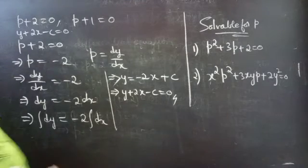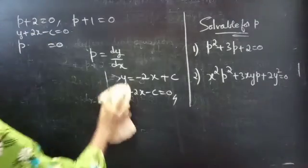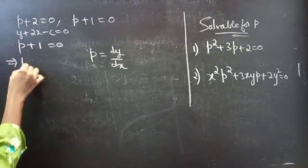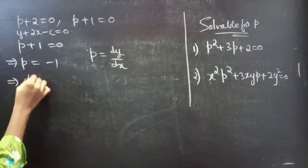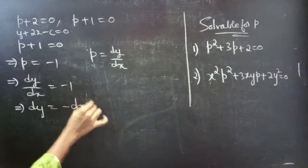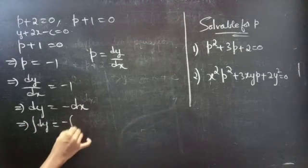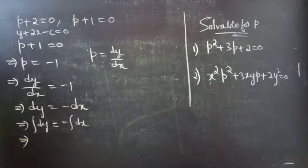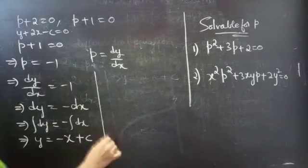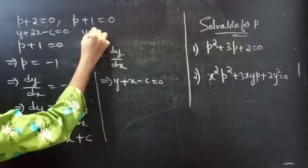Now consider the second factor: P plus 1 equals to 0, so P equals to minus 1. Substituting P equals dy/dx gives dy/dx equals to minus 1, so dy equals to minus dx. Performing integration: the integral of dy equals to minus the integral of dx, giving y equals to minus x plus constant c. Therefore, y plus x minus c equals to 0 is the solution for the second factor.